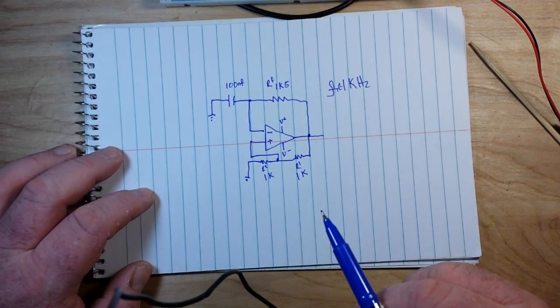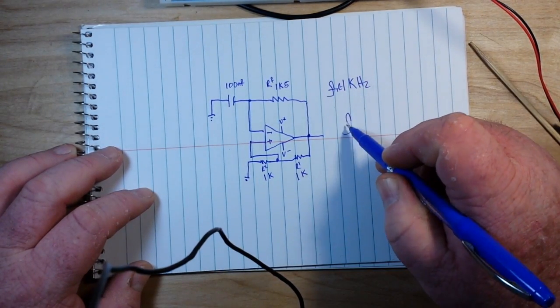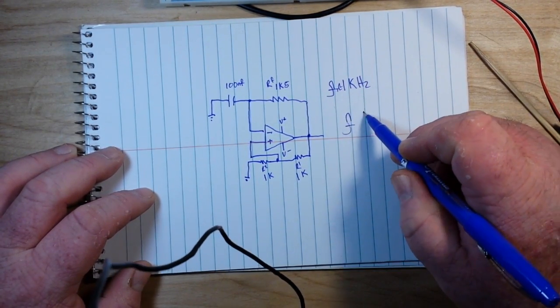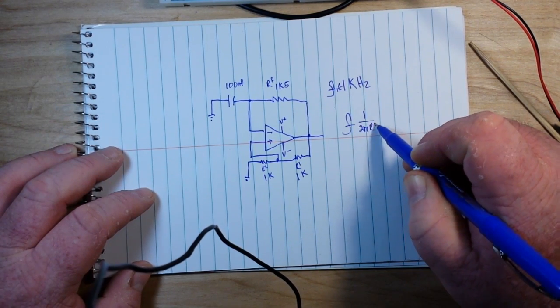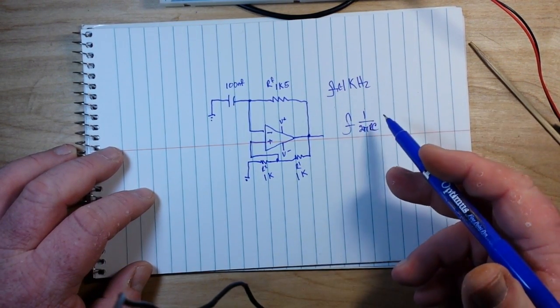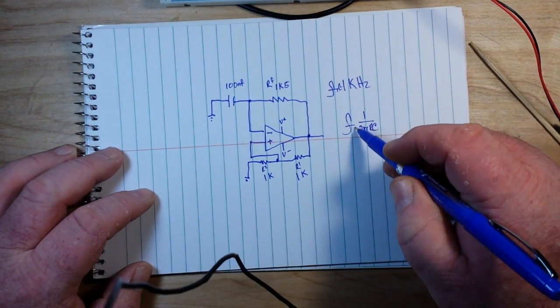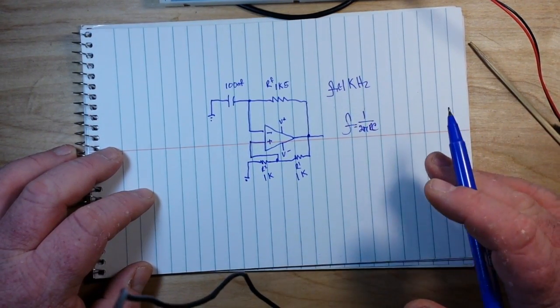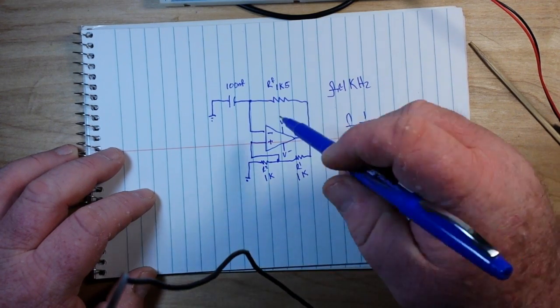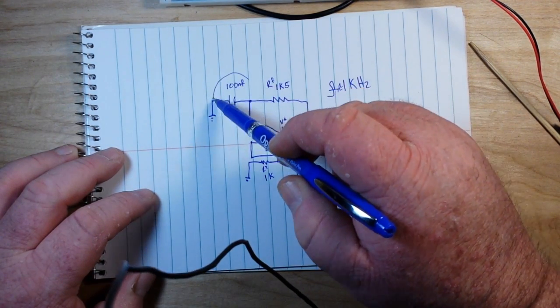About, because of course the formula for the frequency is 1 over 2πRC, or it is the reciprocal of 2πRC. So if you wanted to change this, you can change the frequency and tune your oscillator by changing the capacitor.